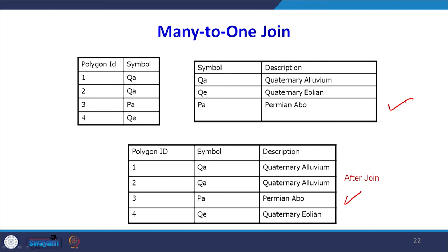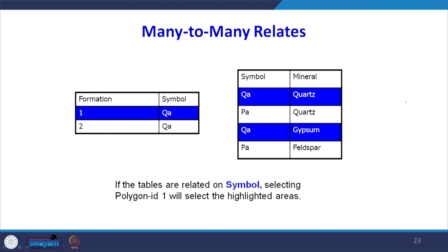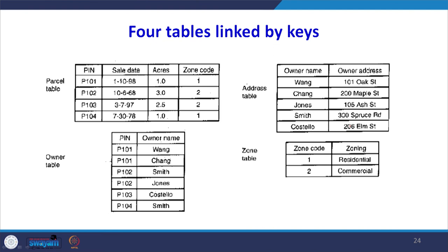In many-to-many relationships, for example formation QA is related to both quartz and gypsum — many here and many there. Tables are linked by keys: a parcel table, address table, owner table, and zone table can all be interlinked together using primary keys and foreign keys to create a larger database from these four tables linked together.